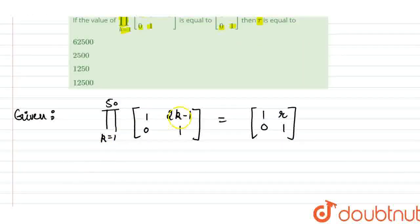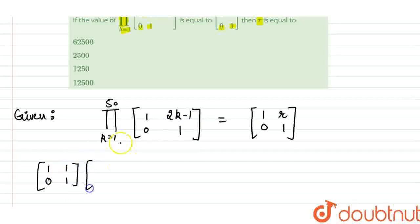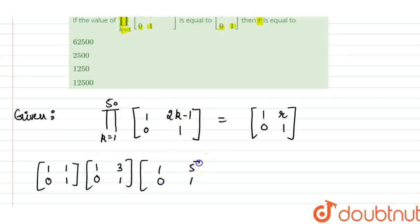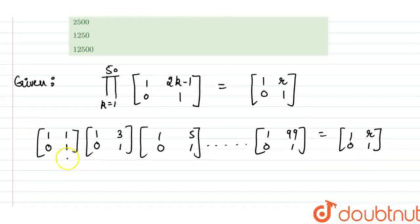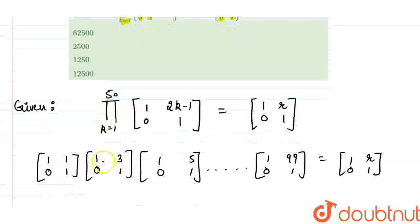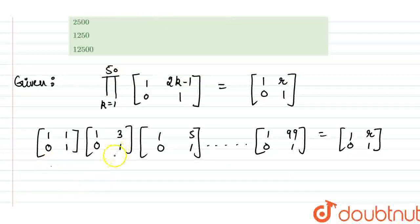So this means that if we put k=1 here, the matrix is [1, 0; 1, 1]. If we put k=2, this becomes [1, 0; 3, 1]. For k=3, this becomes [1, 0; 5, 1], and so on, up to k=50 which gives [1, 0; 99, 1]. This product equals [1, 0; R, 1]. We have a total of 50 matrices in the product.